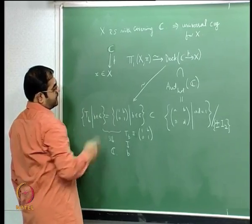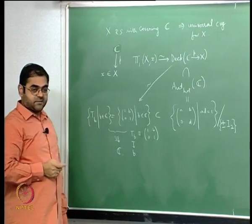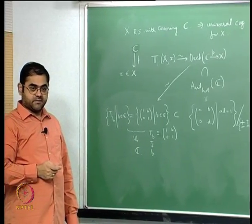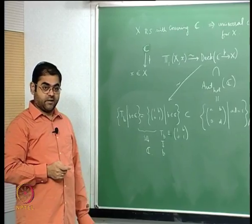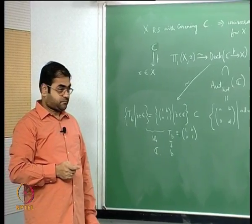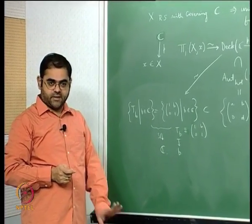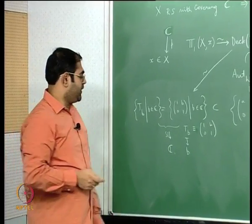The first observation is that π₁ has to be abelian, because π₁ is a subgroup of this group of translations, and translations commute with one another. Therefore this is an abelian group and π₁ is abelian. So this condition that X is a Riemann surface with universal covering C automatically forces that the fundamental group of X has to be abelian.